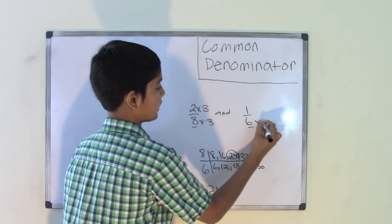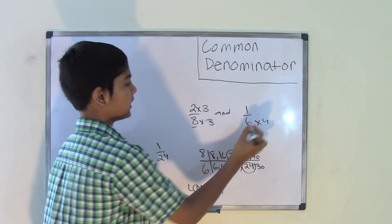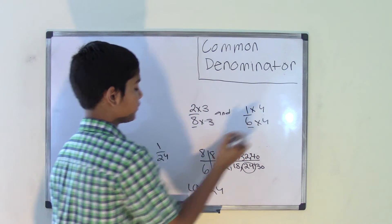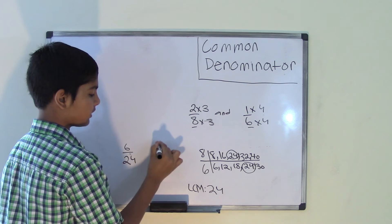Since we did 6 times 4 to get 24, we multiply 1 times 4. And we know that 1 times 4 is 4.